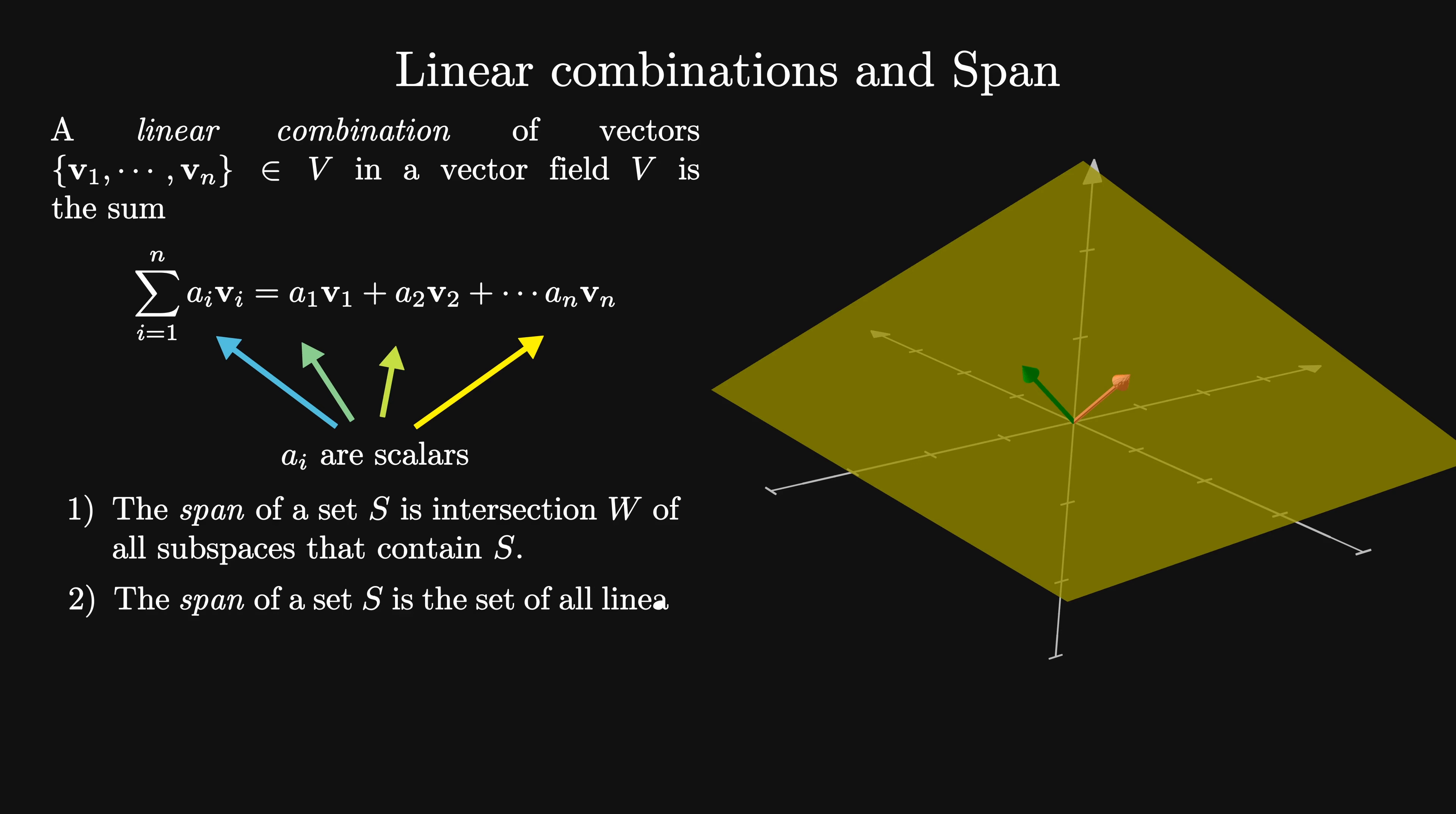The alternate definition is the span of a set S is the set of all linear combinations of vectors in S, given by the sum on i from i equals 1 to the number of elements in S of aᵢ times vᵢ, where the aᵢ's can be any scalars and the vᵢ's are elements in S. As we sweep across all possible aᵢ's, we construct the span of S.